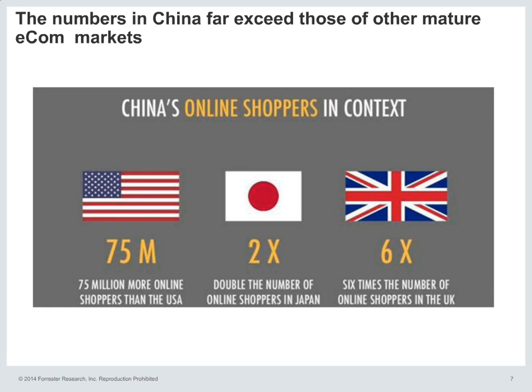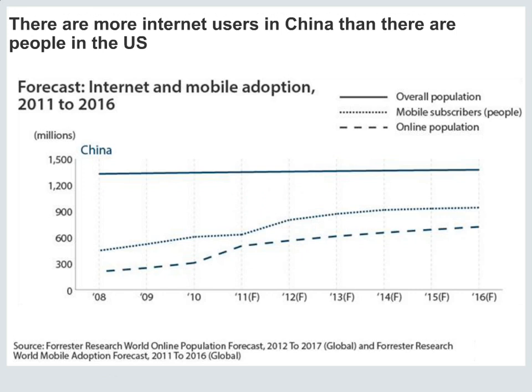To give you a little perspective around how online shoppers in China compare to those across the rest of the globe: there are 75 million more online shoppers in China than in the U.S., double the number of online shoppers in Japan, and six times the number of online shoppers in the U.K. Those are three markets traditionally considered very advanced e-commerce markets. And as this graph shows, there are more Internet users in China today than there are people in the U.S., with online penetration reaching about 50% across all of China by 2016.